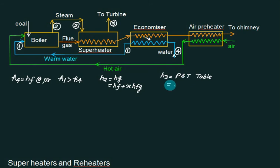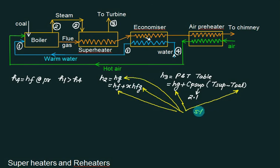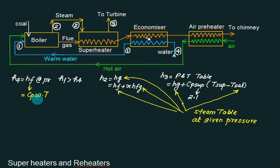If the data is not available in the table, you can use the formula: HG plus CP_sup multiplied by (T_sup minus T_sat). The value of CP_sup you can take as 2.1. The values of HG, T_sat, HFG, and HF are to be collected from the steam table at the given pressure. The value of HF can be taken as CP of water multiplied by temperature. For this, use table number 2; to collect superheated data use table number 1.